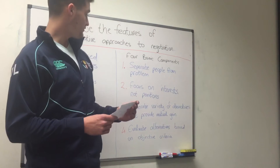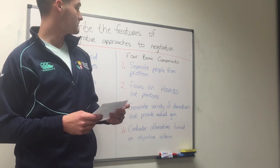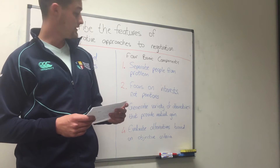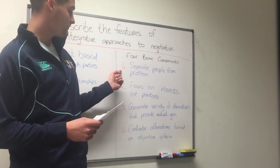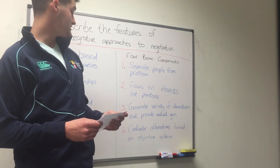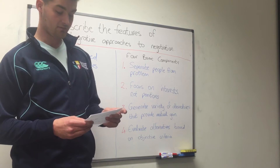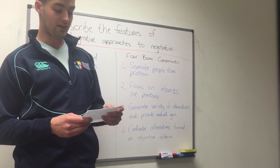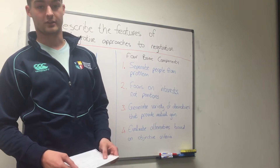There are four basic components to integrated approaches to negotiation, outlined by Fisher and Ury. The first is to separate the people from the problem. The second is to focus on the interests and not the positions. The third is to generate a variety of alternatives that provide mutual gain, and the fourth is to evaluate the alternatives based on objective criteria.